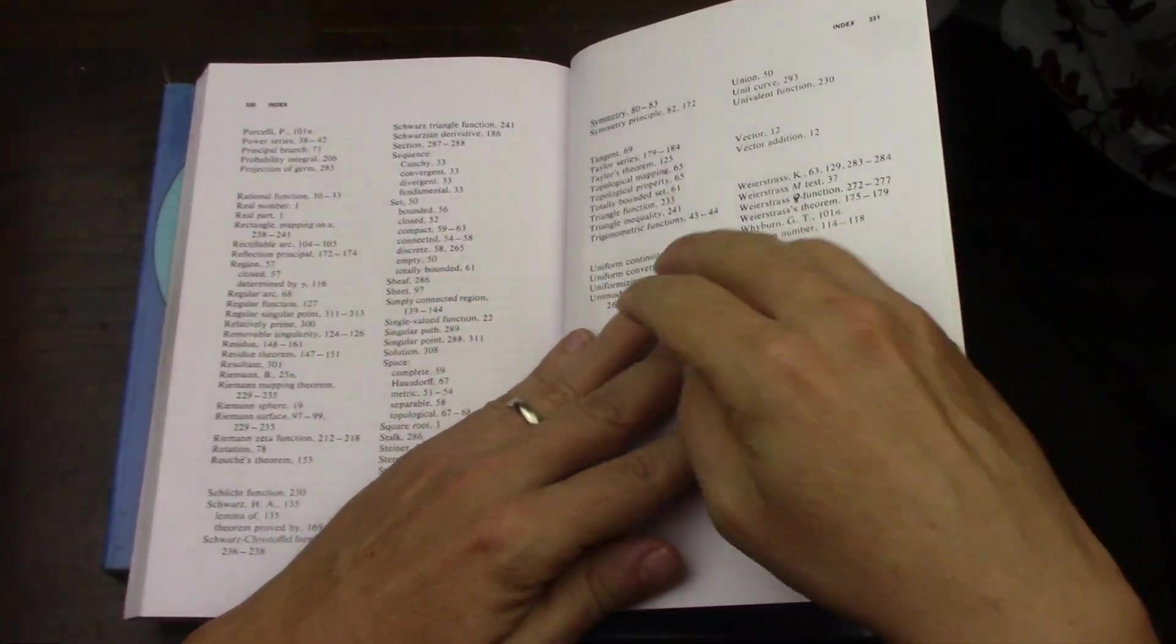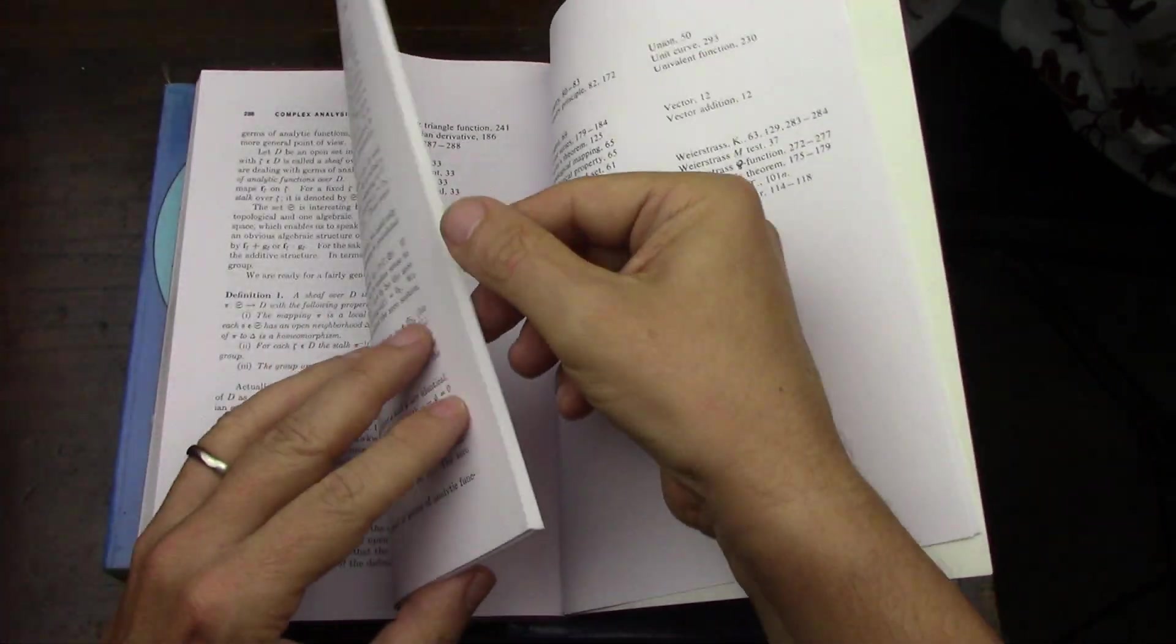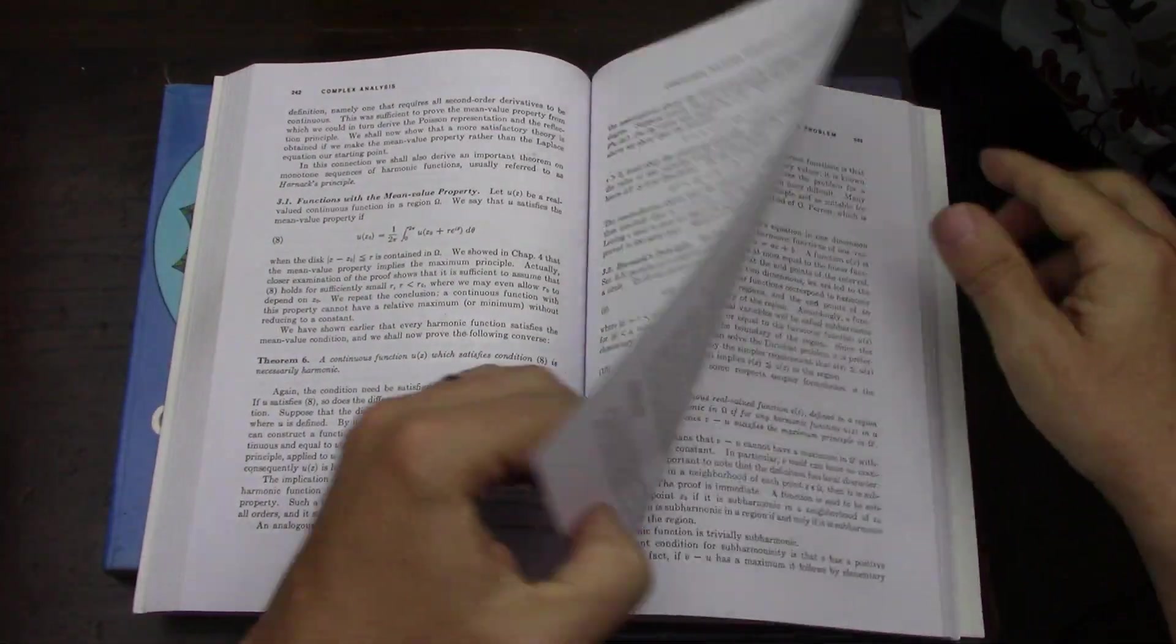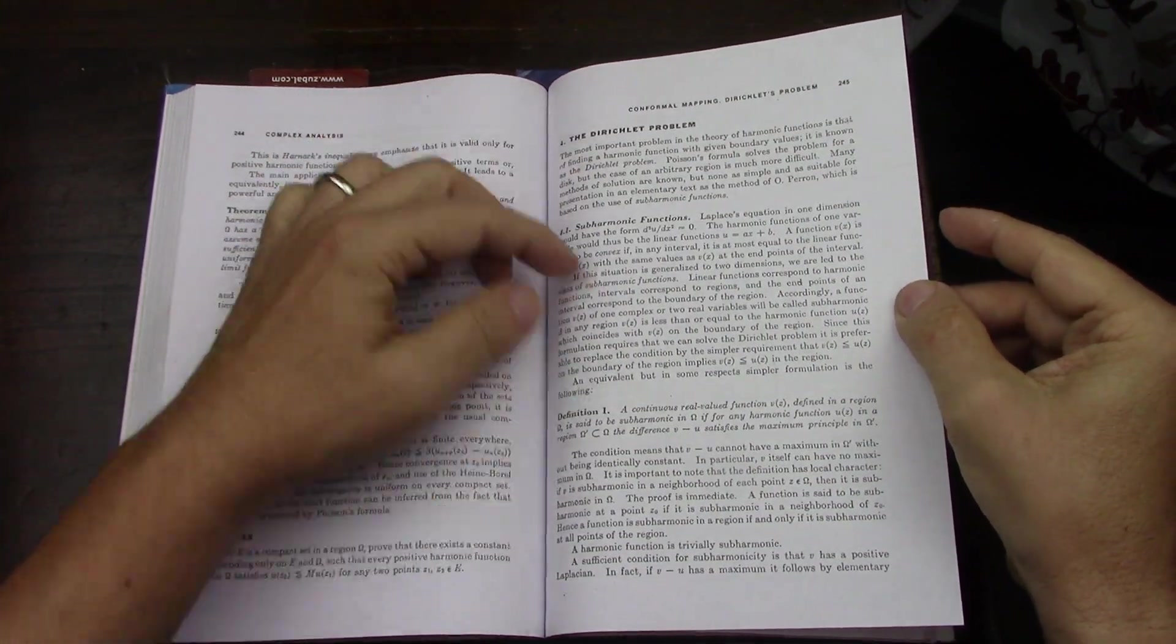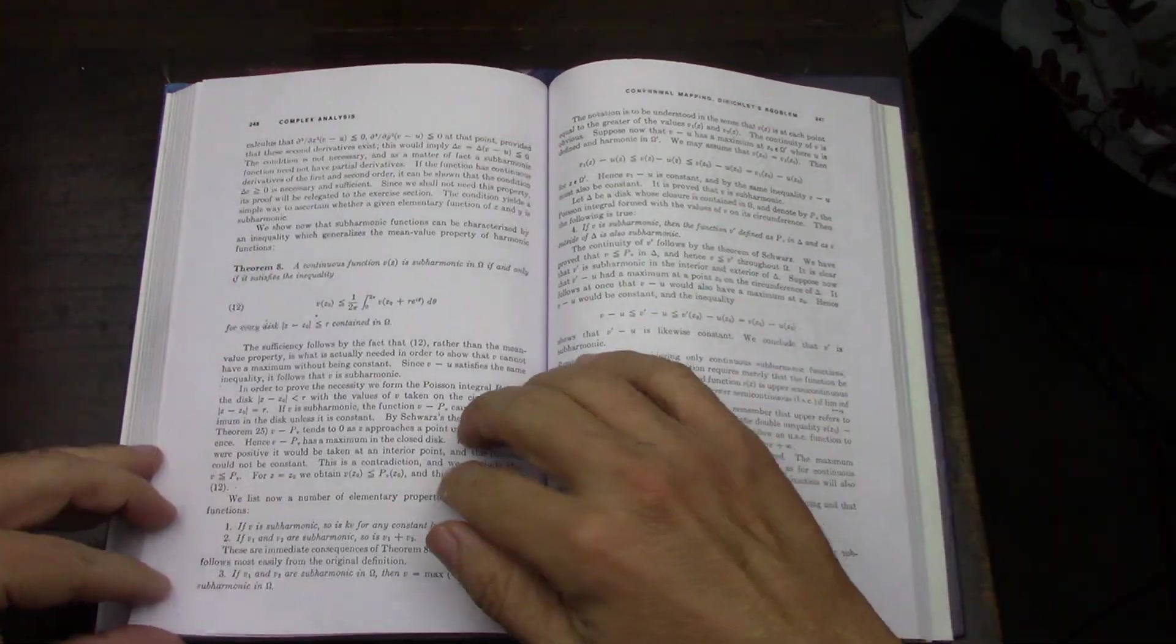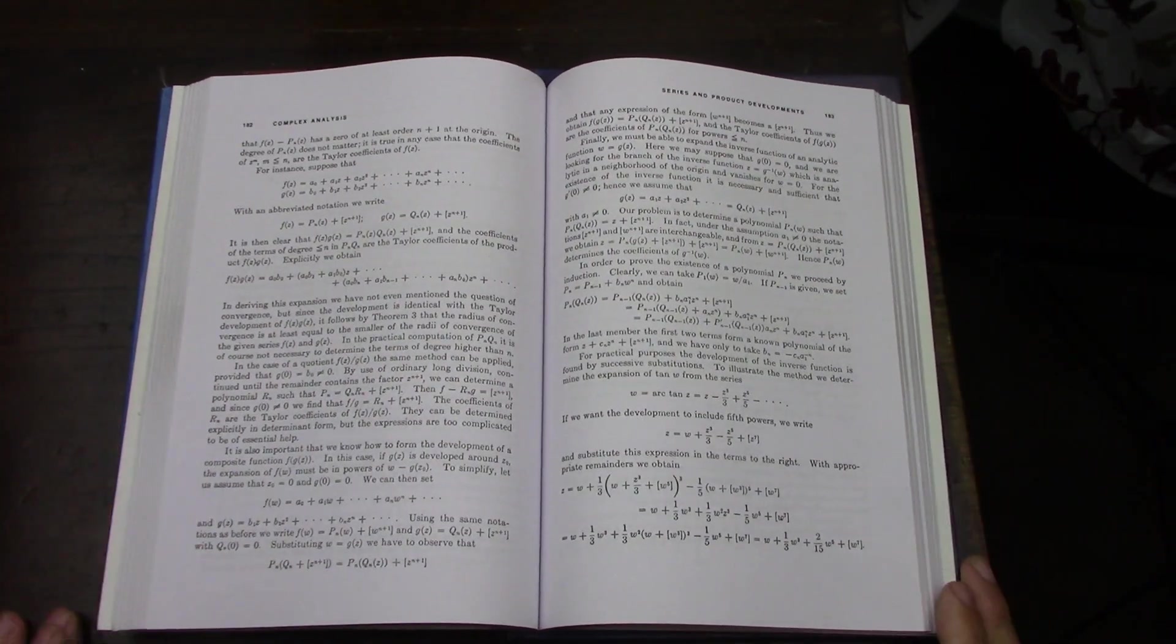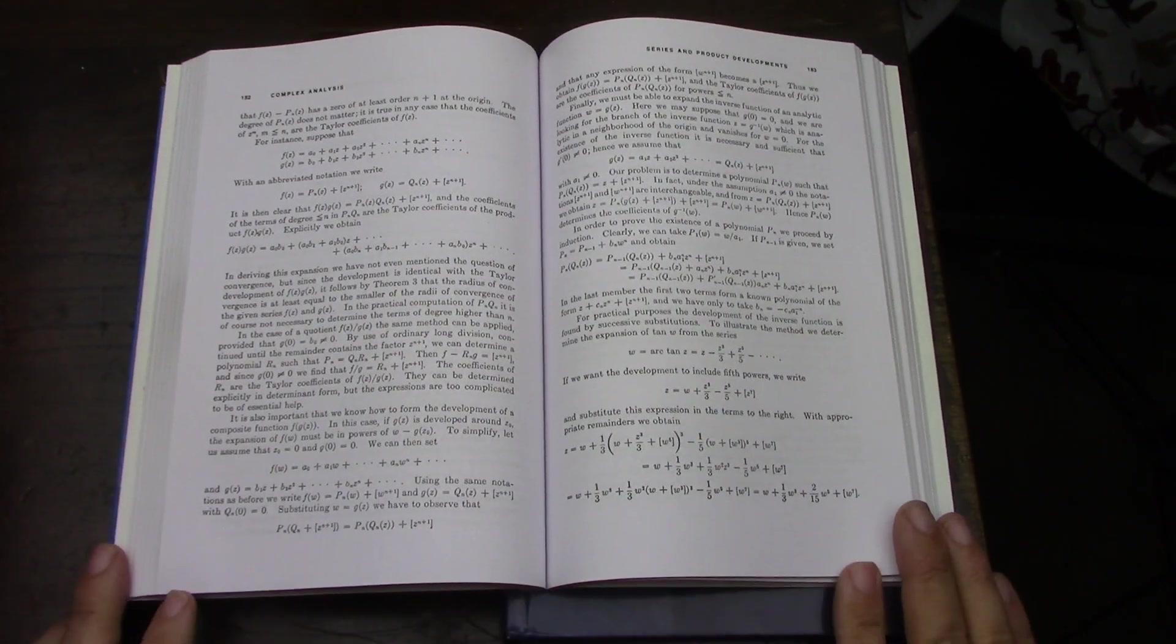Page 245—it's the Dirichlet problem, and then he goes into subharmonic functions. So yeah, Ahlfors is really the hardest of the four, in my opinion, and the best also. But I just wasn't ready for it. I do self-learning, so I'm very limited, and I need answers, for instance.